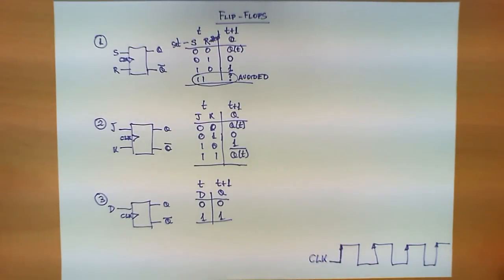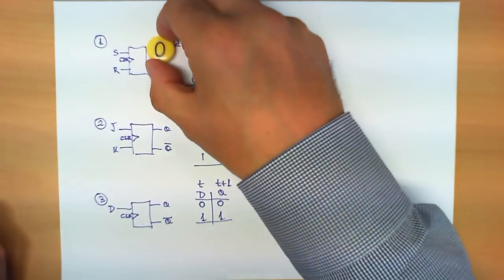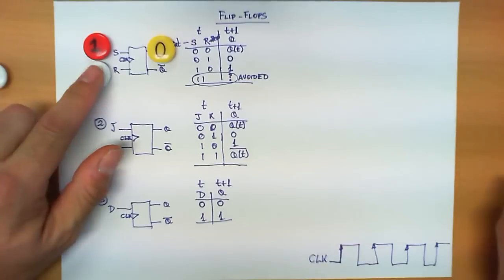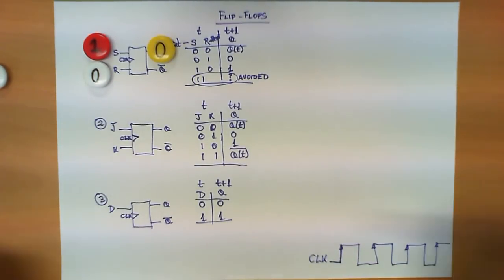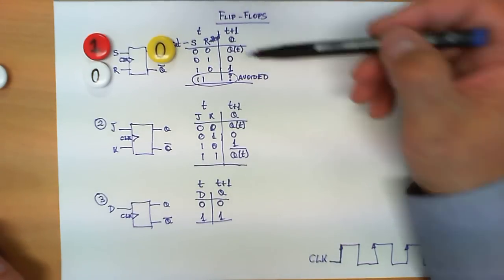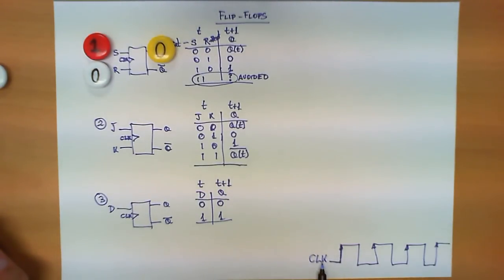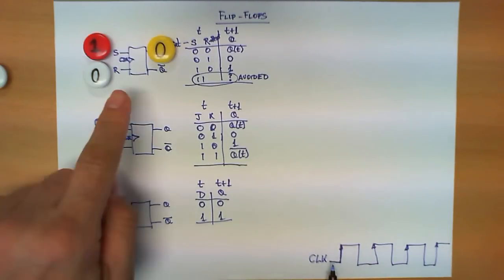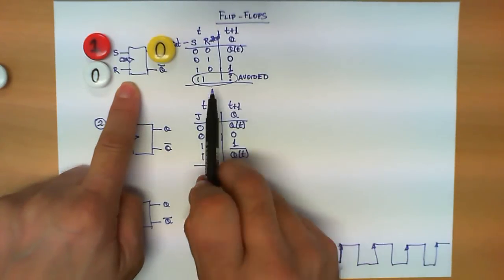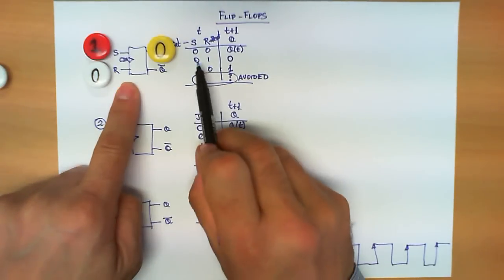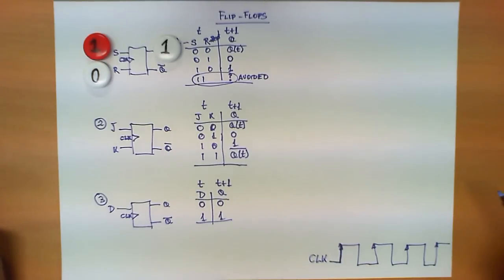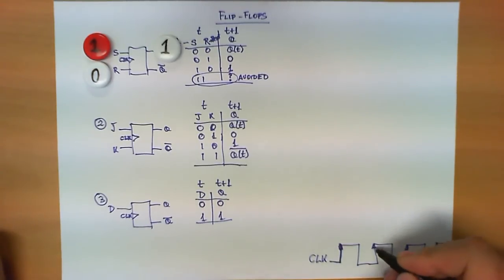Let's take another look at how these flip-flops work. Suppose we have a 0 at the output and a 1 at S and a 0 at R. The truth table tells us that a 1-0 combination will produce Q becoming 1 when the next clock ticks. As long as there is no rising edge, the circuit remains unchanged, but as soon as the clock has a rising edge, the table is evaluated and the 1-0 combination means the output becomes 1. The most important thing is that this table is only evaluated when the clock has a rising edge.